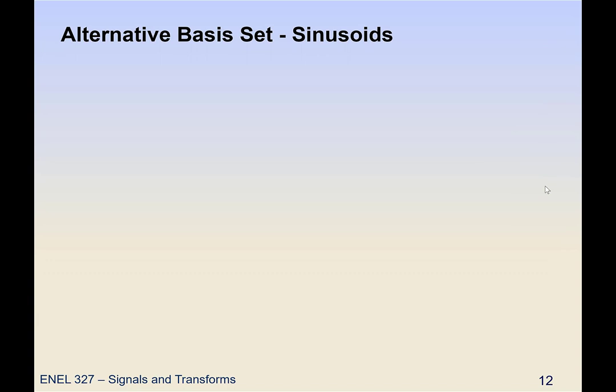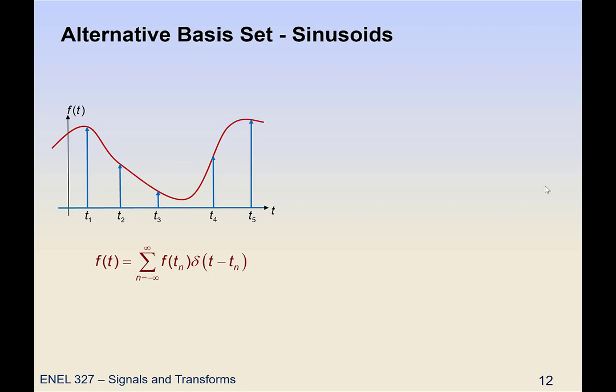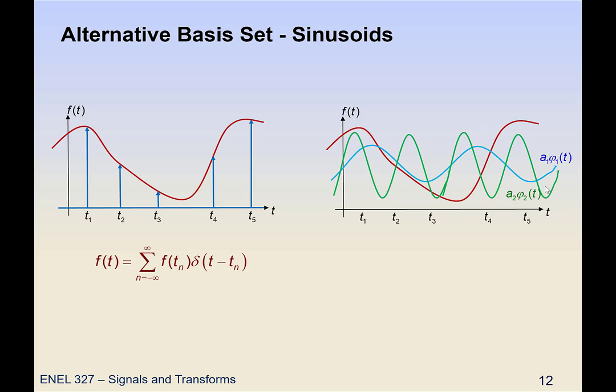So this is where we start to get into the frequency domain. So now we're going to focus on a very specific set of basis functions, and we're going to use sinusoids. So in the time domain, the basis that we typically used was impulse functions, because that was the most general one we could use. So now we're going to take a look at using successive frequencies of sinusoids to approximate f(t). And this is something that you've already done back in your math class last semester, and that would be the Fourier series. And we call the decomposition by impulses, we call that time domain analysis of a signal. Decomposition with sinusoids, we call frequency domain analysis.